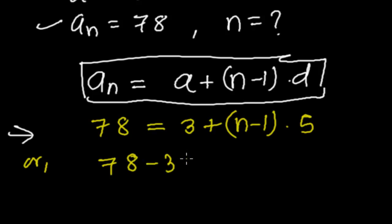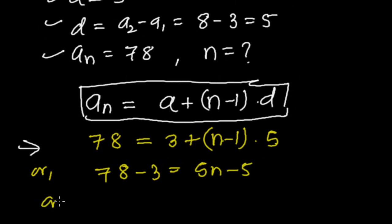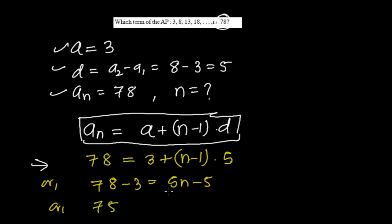Now 78 minus 3—I'm taking this minus 3 to this side—now it will be 5n minus 5. Or 75—I'm taking this negative 5 to this side so it will be positive 5.